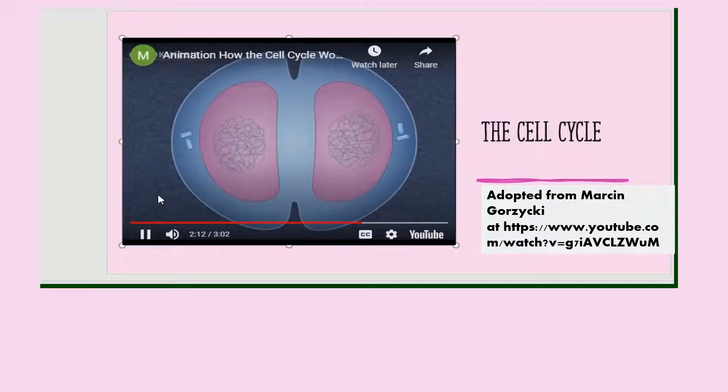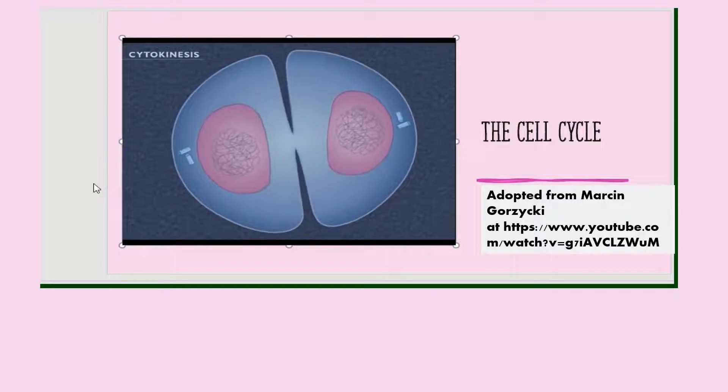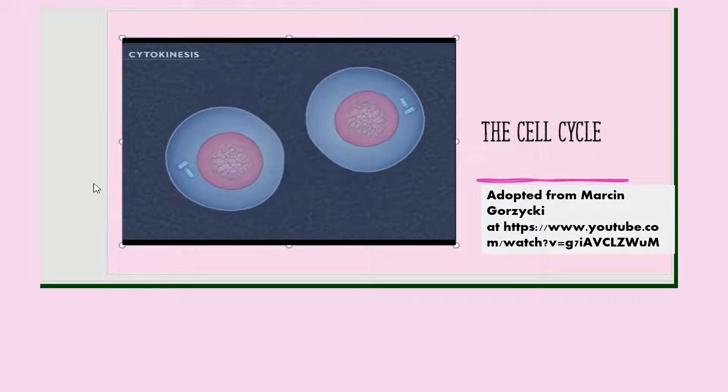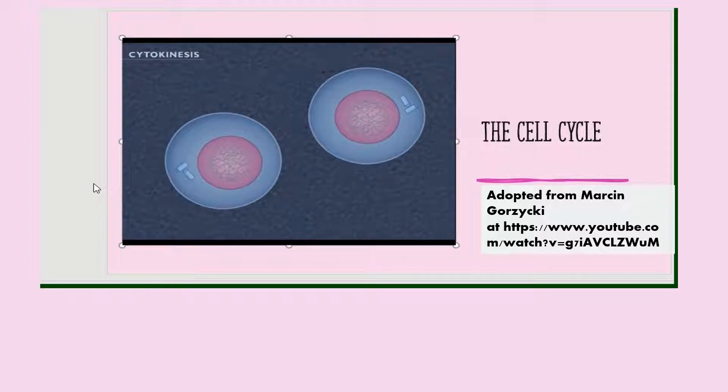The division of the cytoplasm and organelles is called cytokinesis or the C phase. The result of mitosis and cytokinesis is the formation of two genetically identical cells.